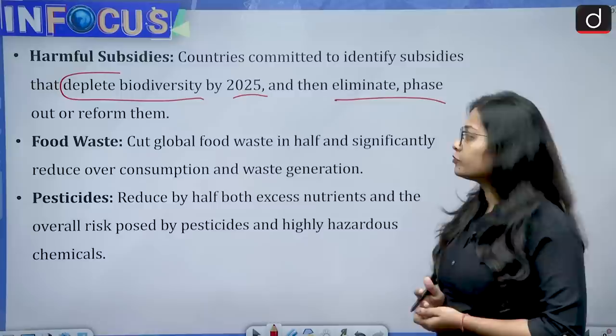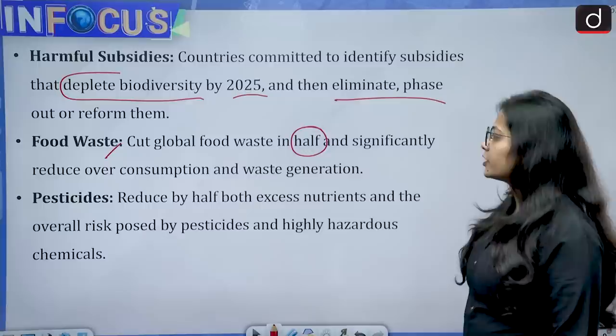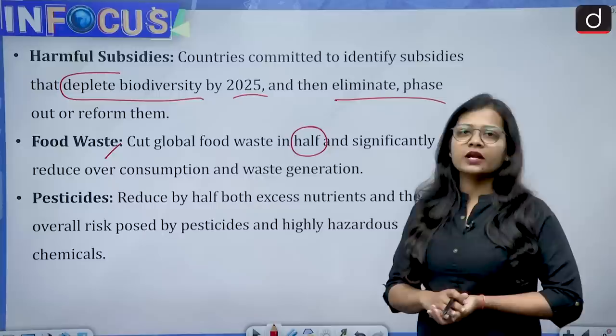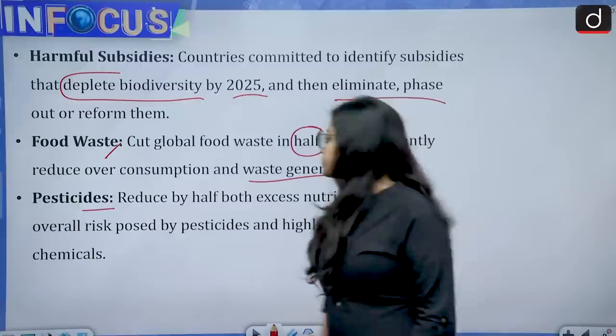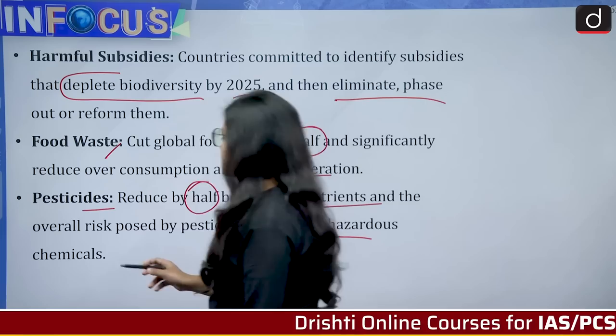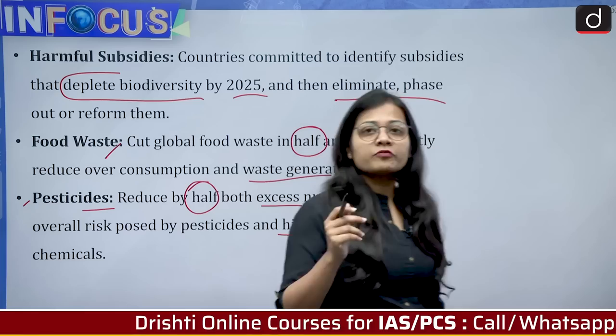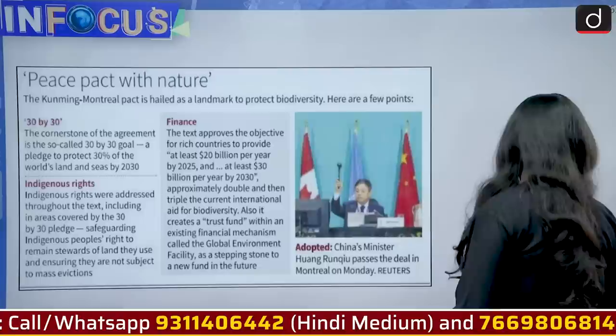The GBF also talks about cutting global food waste in half and significantly reducing overconsumption and waste generation. On one hand, many people lack enough food, while on the other, food is being wasted — so waste generation needs to be minimized. Regarding pesticides, they should be reduced by half — both excess nutrients and the overall risk posed by pesticides and highly hazardous chemicals that are harmful to crops and ecosystems.